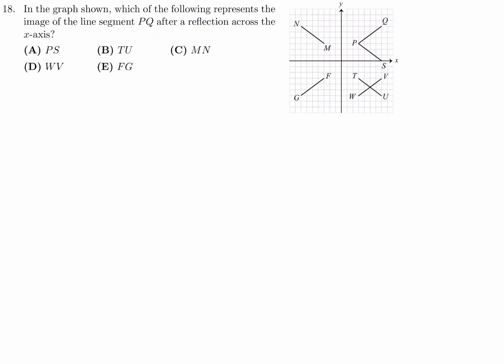In the graph shown, which of the following represents the image of the line segment PQ after a reflection across the X-axis? Here's that X-axis, and we're reflecting. So P is 3 units above, so it's going to be 3 units below. So Q is 1, 2, 3, 4, 5, 6 units above, so it's going to be 6 units below. And the line that joins those two is T to U. So that is the reflection. Therefore, number 18, the answer is B.